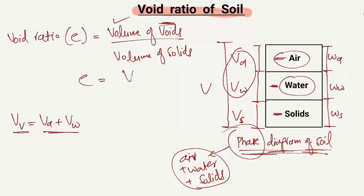So we can say the void ratio e is equal to the volume of voids VV divided by the volume of solids VS. This is known as the void ratio of the soil sample from the phase diagram.